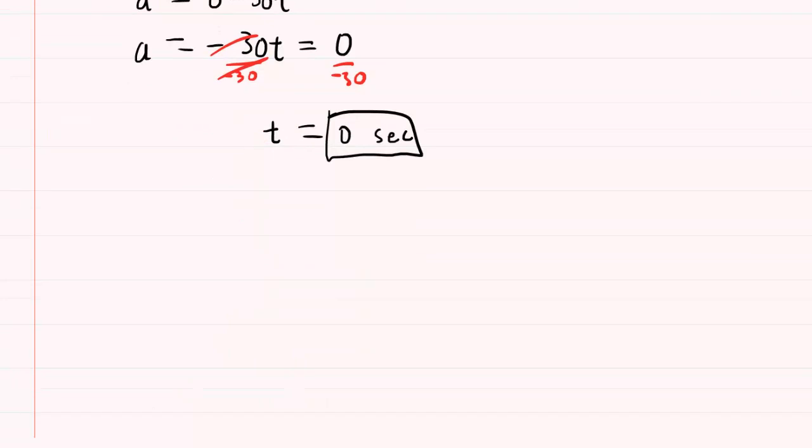Well, we can obtain that time range perhaps by sketching a graph of the acceleration function. So we'll put acceleration on the y-axis and time on the x-axis. The equation that we're graphing again is a is equal to negative 30t.